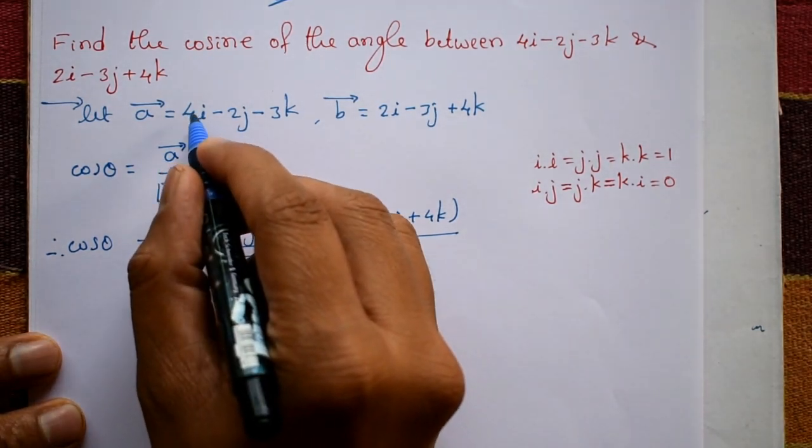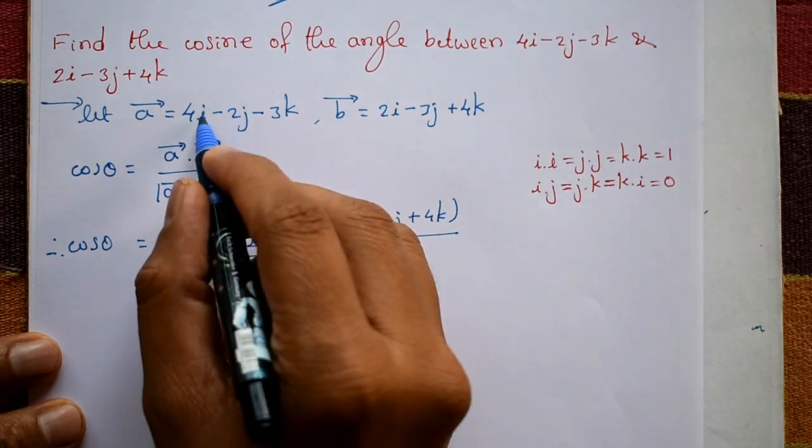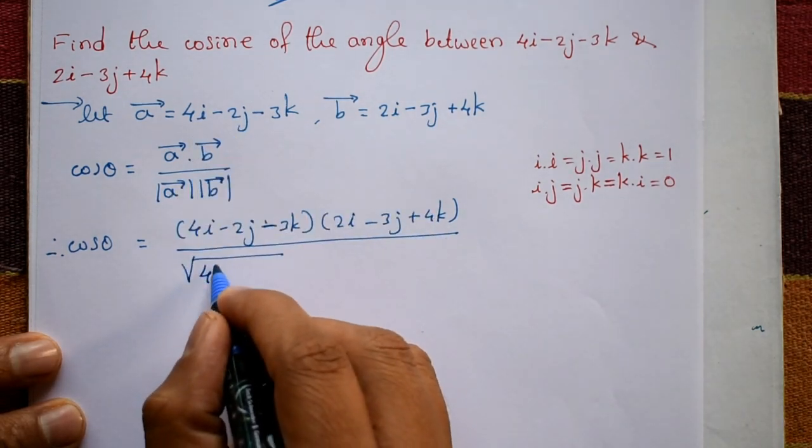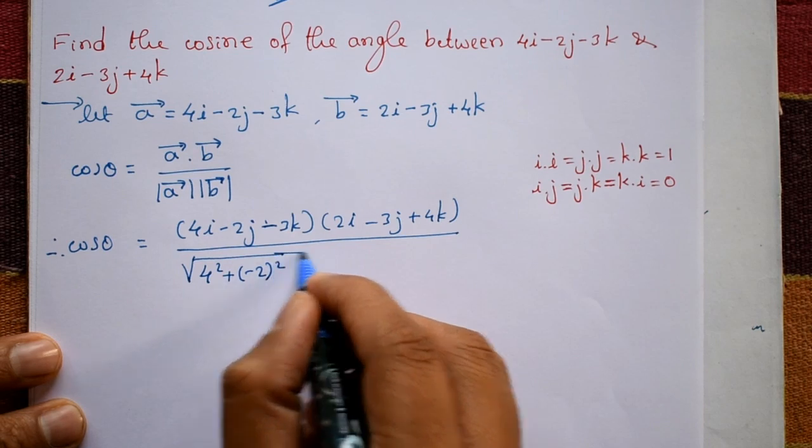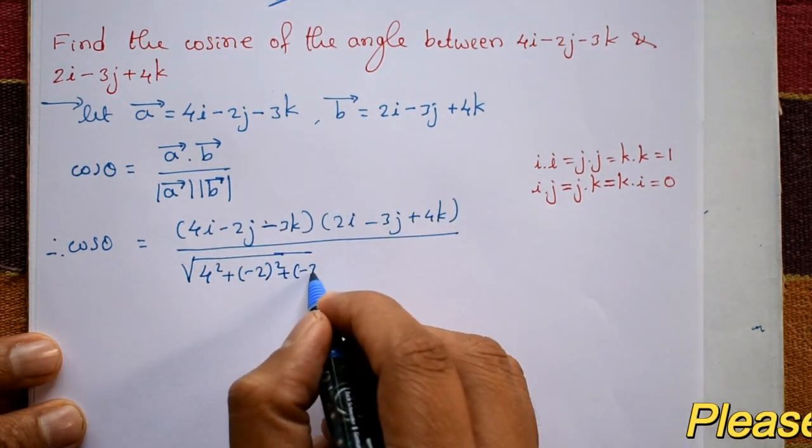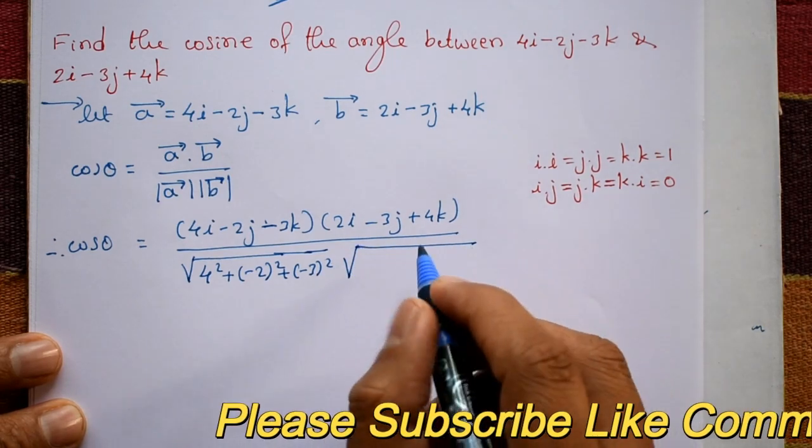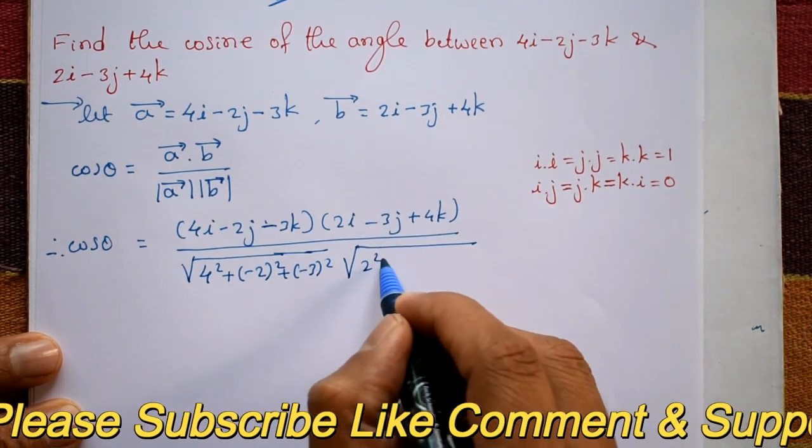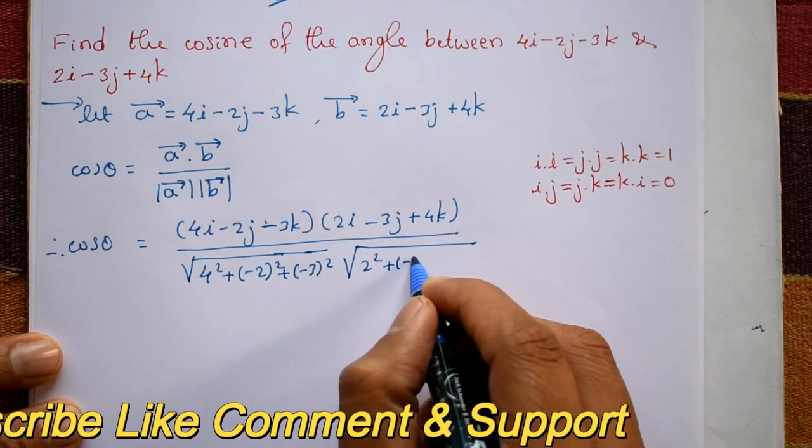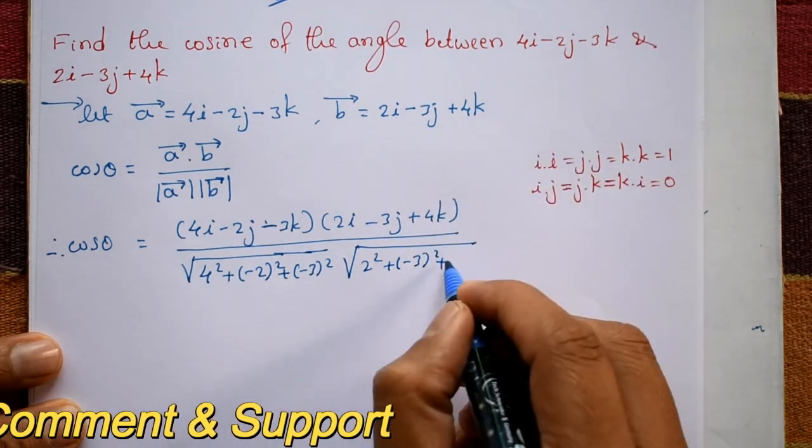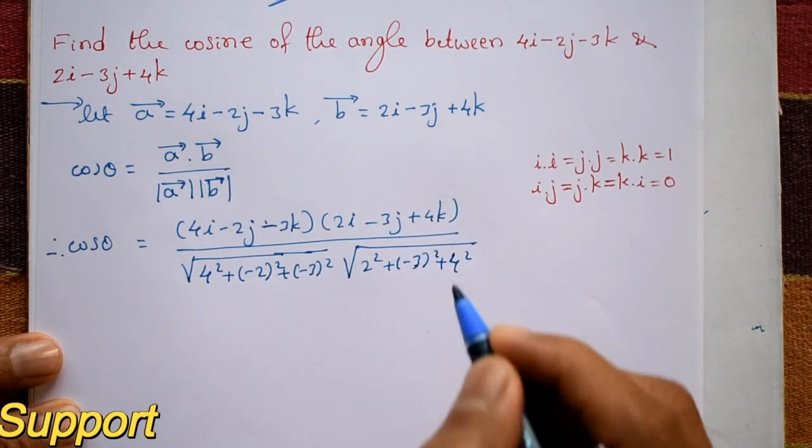The magnitude is square root of taking the ijk coefficients: 4 squared plus minus 2 squared plus minus 3 squared, into magnitude of vector b, which is 2 squared plus minus 3 squared plus 4 squared.